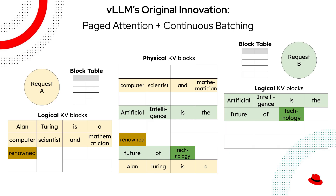Continuous batching increases throughput by processing multiple requests simultaneously in an asynchronous way. Instead of handling each user request individually, VLM batches inputs together dynamically as they arrive and finish,